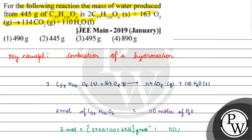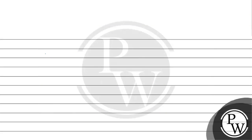So 2 moles of C57H110O6 gives us 110 moles of water. The molecular mass of water is 2 + 16 = 18 g/mol, giving 110×18 = 1,980 grams of water. The molecular mass of C57H110O6 is 890 g/mol, so 2 moles = 890×2 = 1,780 grams of C57H110O6.